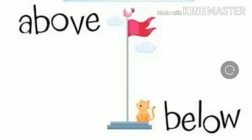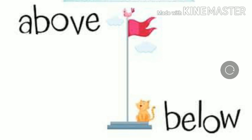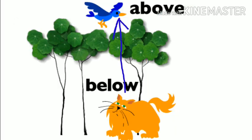Let's learn above and below. The flag is above the cat and the cat is below the flag. Here, the bird is above the cat and the cat is below the bird.